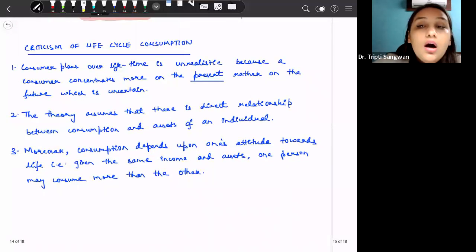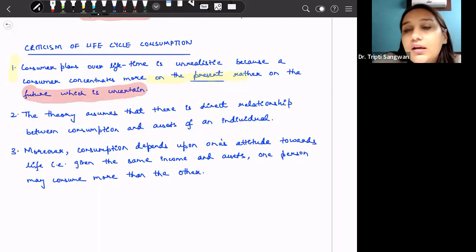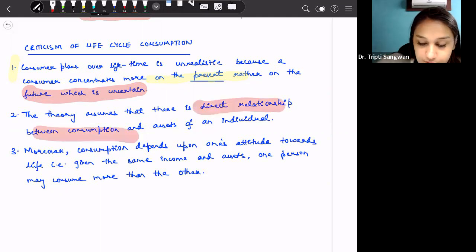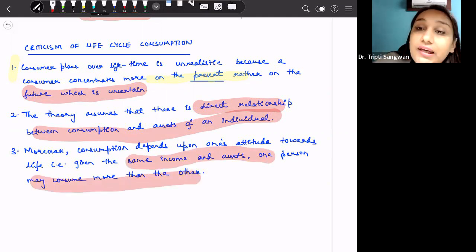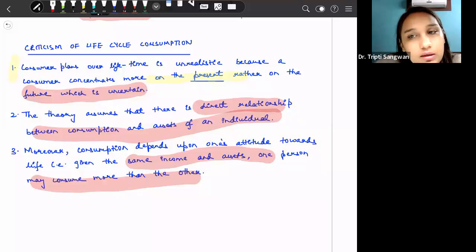There are certain criticisms associated with this theory. First is, consumer plans over lifetime is unrealistic because a consumer concentrates most on the present rather than on future, which is uncertain. So this is an unrealistic assumption in this theory. Second, it says that the theory assumes that there is a direct relationship between consumption and assets of an individual. This might not be true. And moreover, consumption depends upon one's attitude toward life. Given the same income and assets, one person may consume more than the other.